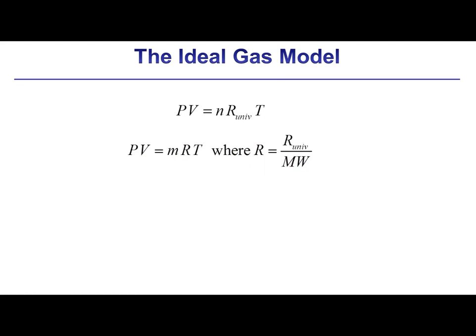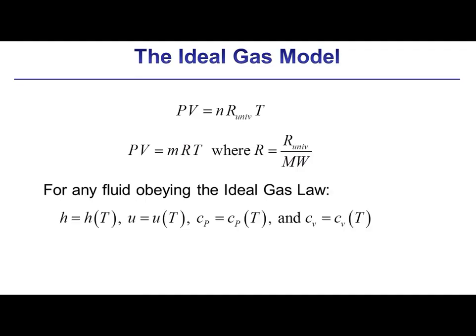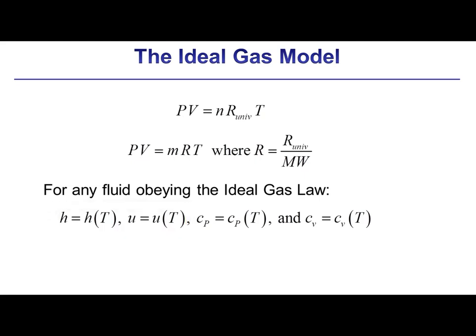The specific volume of the gas can be defined on either a molar or a mass basis, just by dividing the volume by the number of moles or the mass, respectively. It is possible to prove that a fluid that obeys this ideal gas law must also have a specific internal energy and a specific enthalpy that is only a function of temperature, and therefore the Cv and Cp values must also be only a function of temperature.